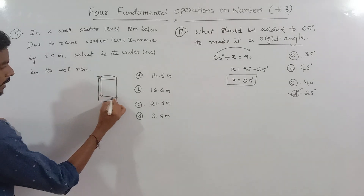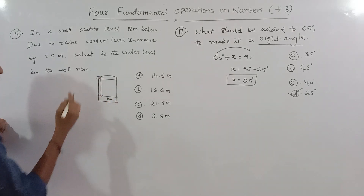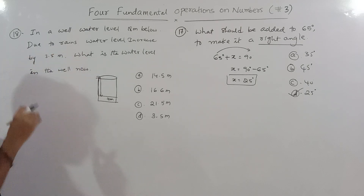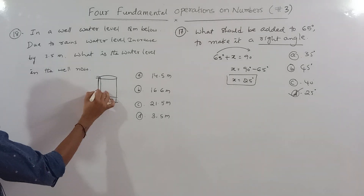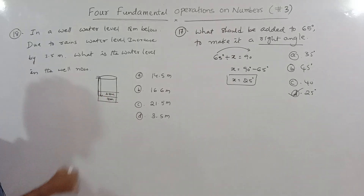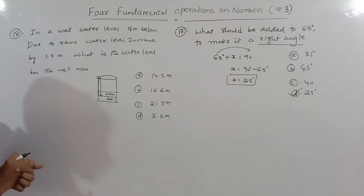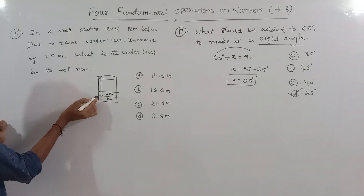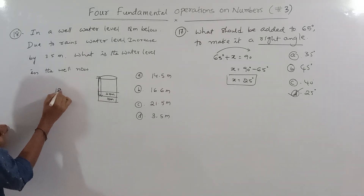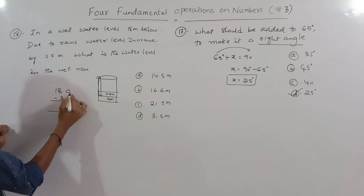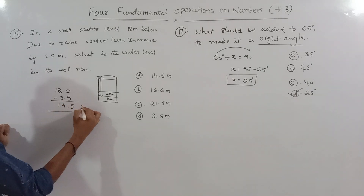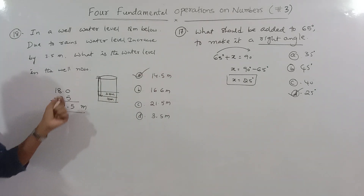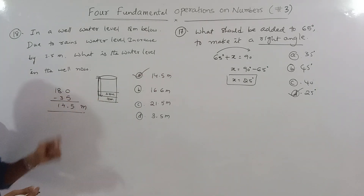Question 18 continued: the water level is 18 meters below. Due to rains, the water level increased by 3.5 meters. What is the water level now? We subtract: 18 − 3.5 = 14.5. So the present water level is 14.5 meters below.